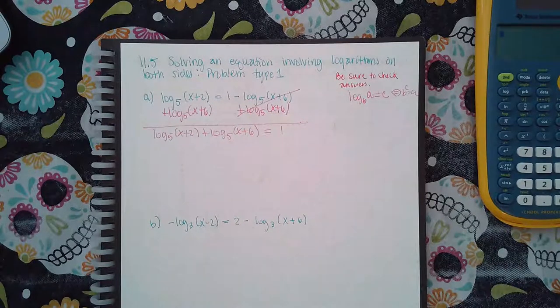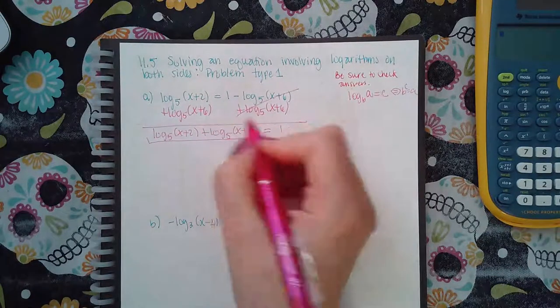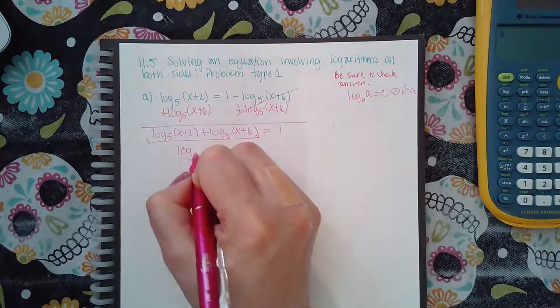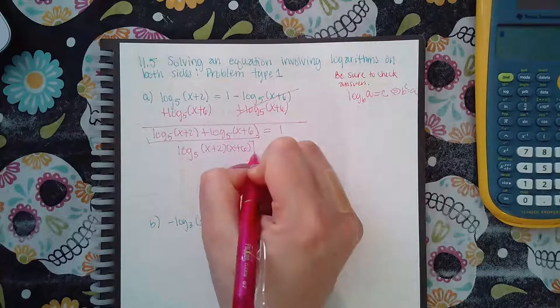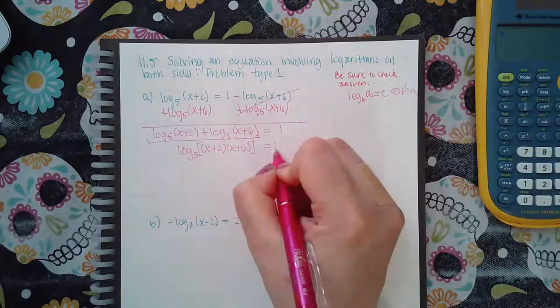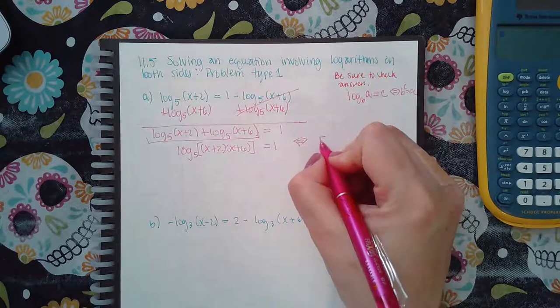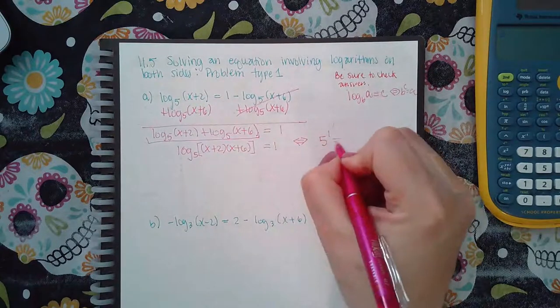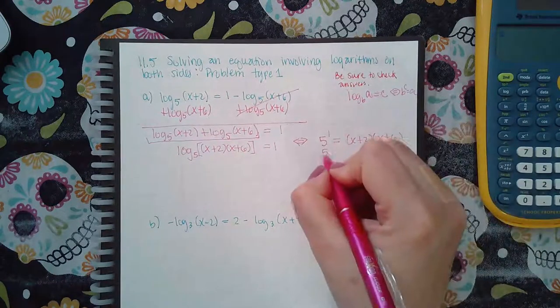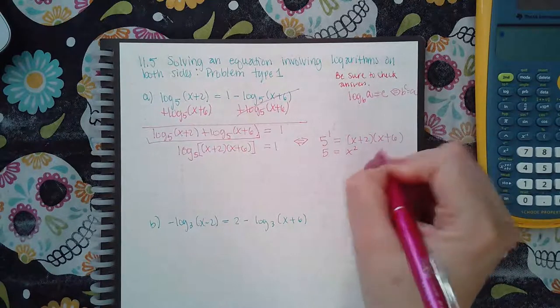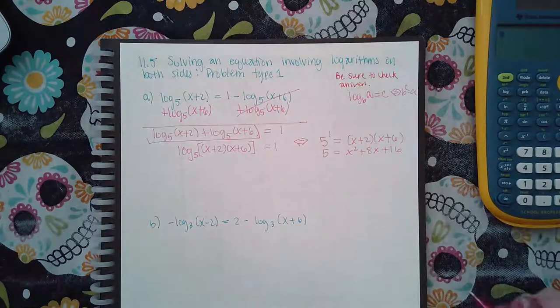Now I almost have what I need, but I have two logs, not one. So if I combine these, since it's a plus sign, that means I'm going to multiply the two arguments together. And then I can switch the forms over. So when I switch over the forms, it's gonna be five raised to this exponent, equal to that argument. So then I just have five equal to x squared, plus eight x, plus twelve if I foil that out and combine my like terms.